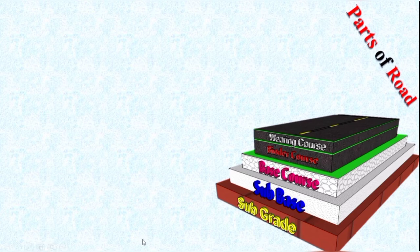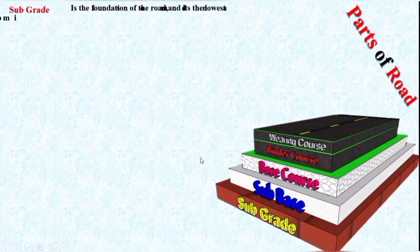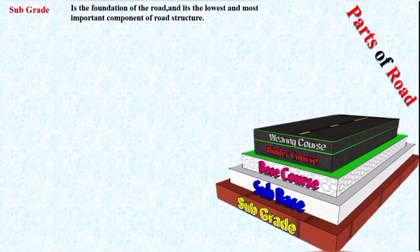Now, the subgrade basically consists of compacted soil. The subgrade acts like a foundation of the road and it is the lowest and most important component of the road structure. Since the subgrade acts as a foundation, it bears all the load acting on the top layers of the road.